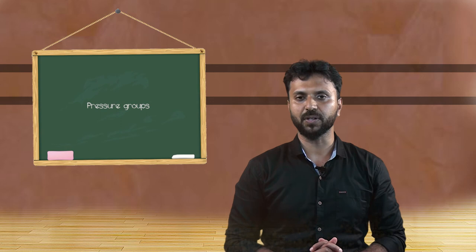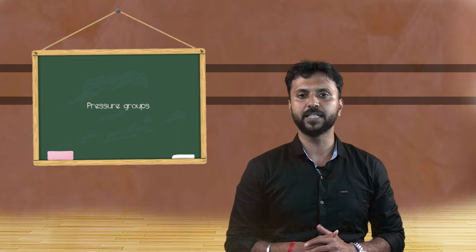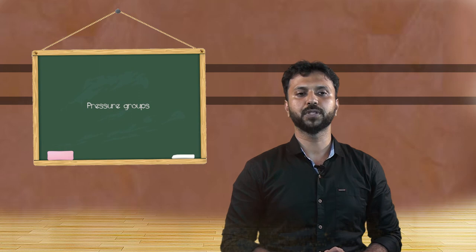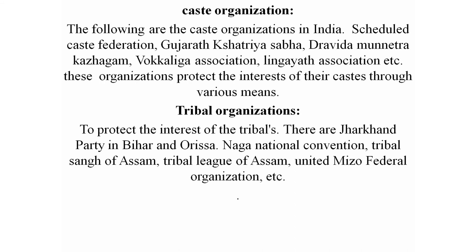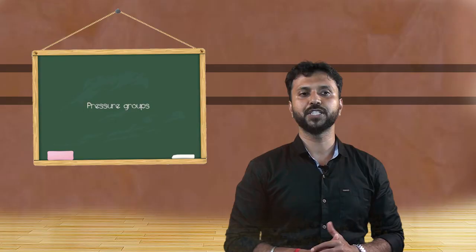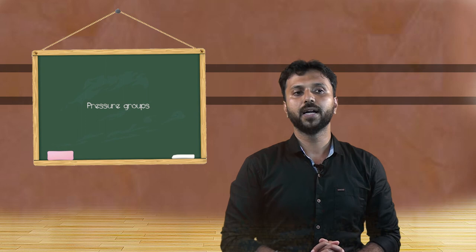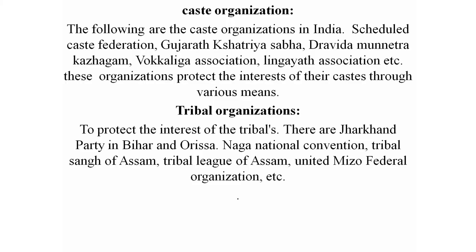Religious and cultural organizations seek to protect the interests of their respective communities, such as the Anglo-Indian Christian Association, Catholic Bishops Conference of India, and others. Some caste and tribal organizations also function as pressure groups in India to protect tribal interests. Examples include the Jharkhand Party in Bihar and Orissa, Naga National Convention, Tribal Sangha of Assam, Tribal League of Assam, and United Mizo Federation.